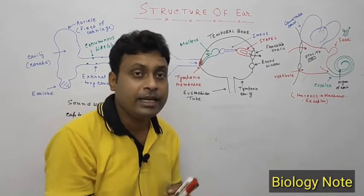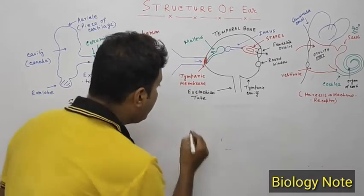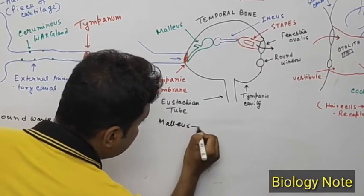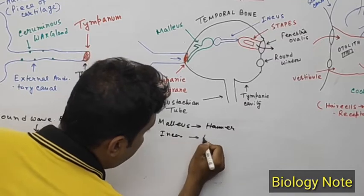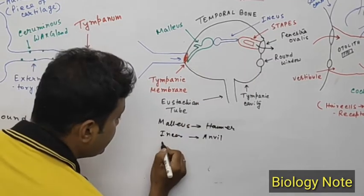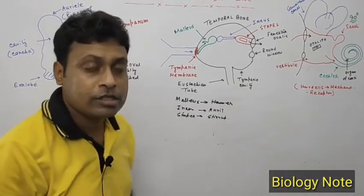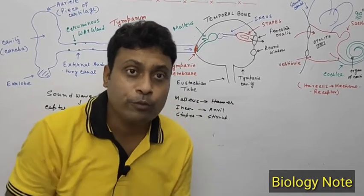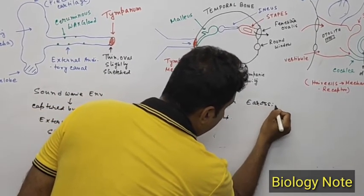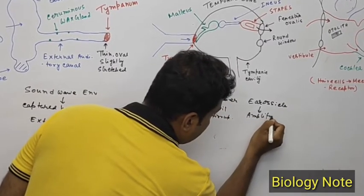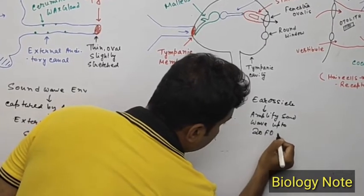In the middle ear, three small bones are present. The first is the malleus, which is hammer-shaped. The second is the incus, which is anvil-shaped. The third is the stapes, which is the smallest bone in our body and is stirrup-shaped. These three small bones present in the middle ear are known as the ear ossicles, and they amplify the sound wave up to 20-fold.